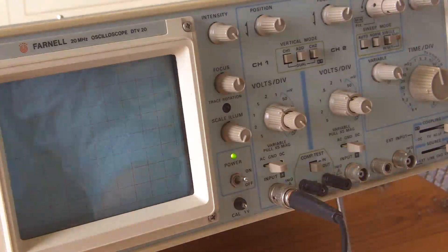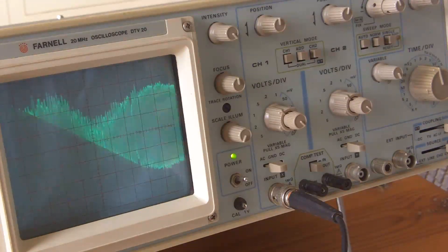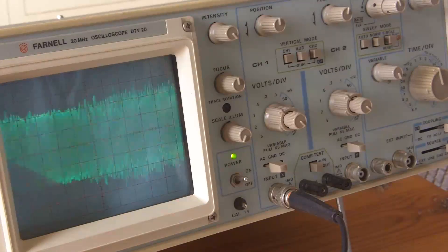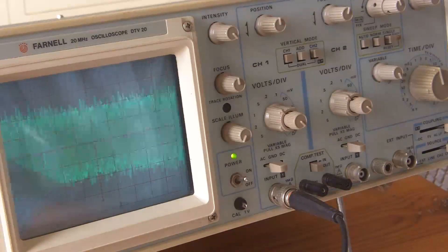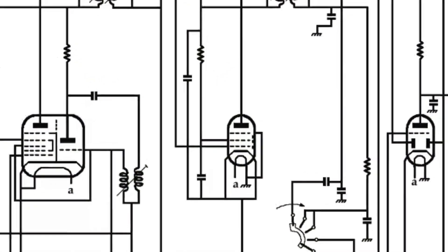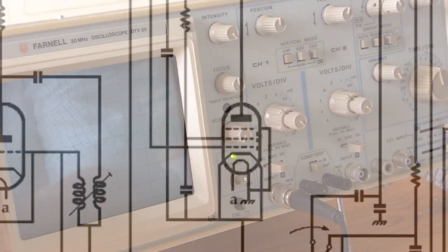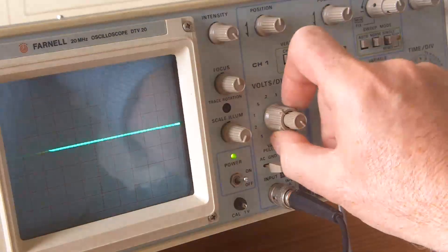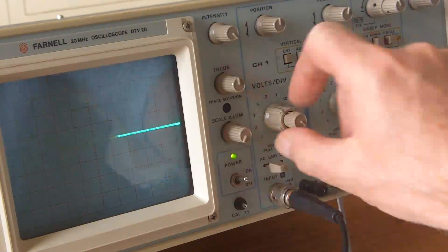And what I'm going to do now is move the oscilloscope onto the input to that valve. If I can find which pin it is. Looks like pin 2. So now I'm on pin 2, and remember we're on 0.5 volts per division.